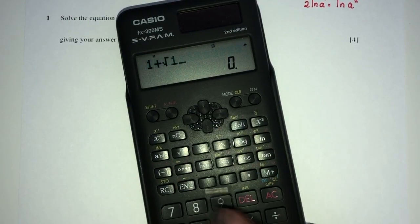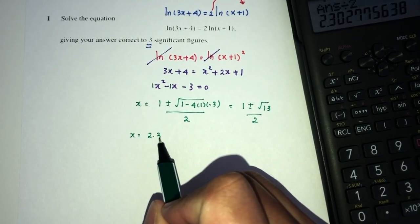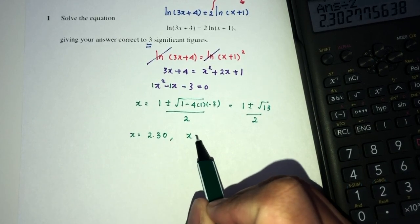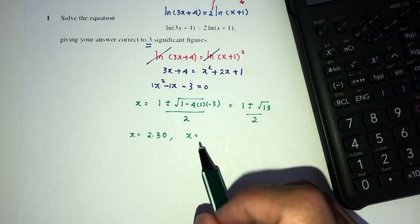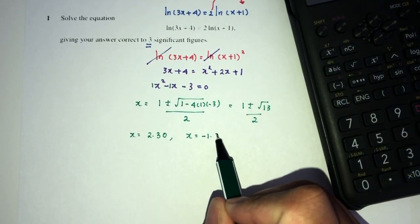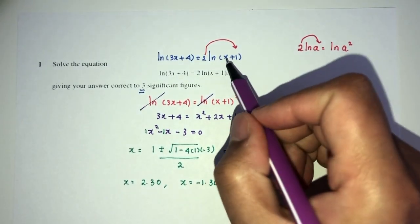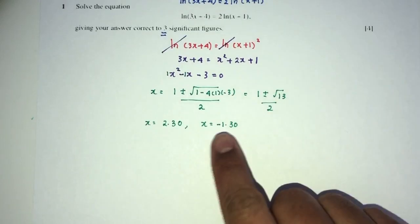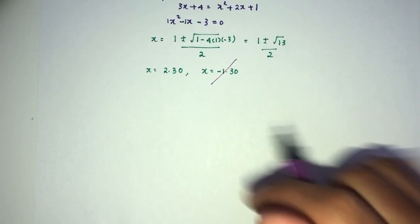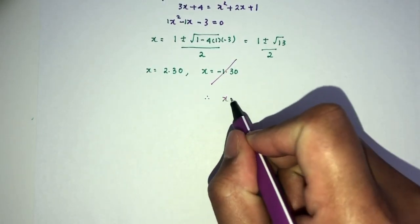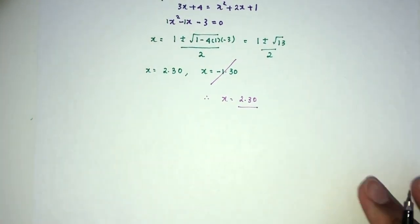So (1 + √13)/2 should be this one, so x will be 2.30, or x will be (1 - √13)/2, that should be -1.30. But again, we do know that ln cannot take the value of negative. If you put this value here, it will be negative and it will not be possible. Hence, this will be rejected. The only value possible will be x equal to 2.30, correct to 3 significant figures. And that is your question number one.